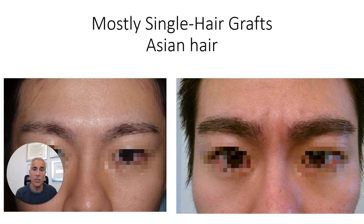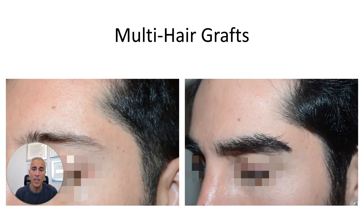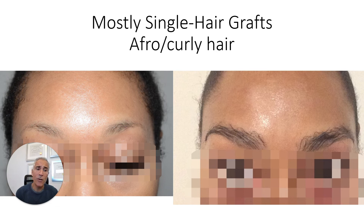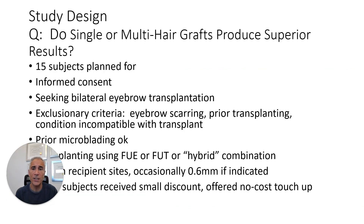With Asian hair, I almost exclusively use all single-hair grafts, though I did use some two-hair grafts in certain parts of the eyebrow to create a fuller look. Another example was achieved with primarily two- and three-hair grafts — you can see the before and after. With afro curly hair, I mostly use single-hair grafts unless both hairs are growing in the same direction. I will always compromise density with my African or Black patients in favor of natural appearance.